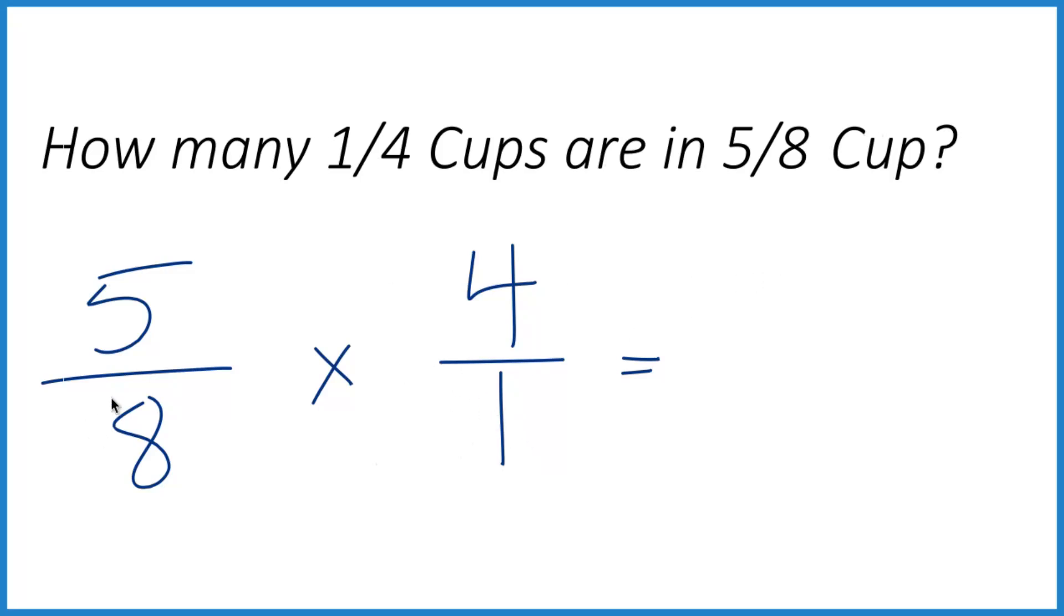Now we're going to multiply across. Five times four is twenty, and eight times one is eight. So we get twenty over eight. This is an improper fraction—the numerator is larger than the denominator.